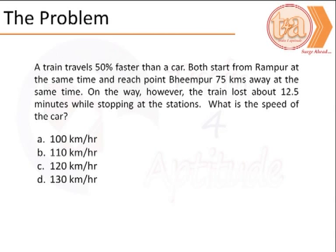What is the speed of the car? Our options are A: 100 km per hour, B: 110 km per hour, C: 120 km per hour, D: 130 km per hour.